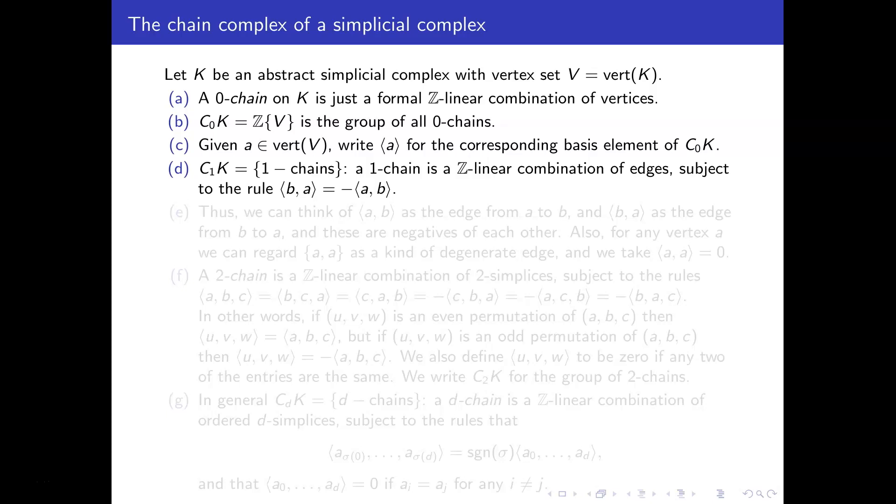So that was our C_0(K), but then we're also going to define C_r(K) for all r. So the next one will be C_1(K), that's the set of 1-chains. And a 1-chain is more or less the same thing as a Z-linear combination of edges. Except there's this kind of little twist to it. We've got an edge, say from a to b, then we can think about that as kind of going from a to b or going from b to a.